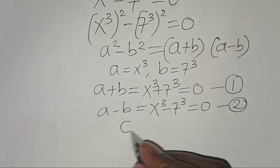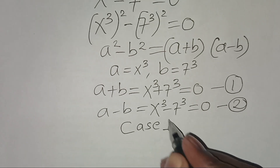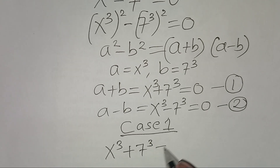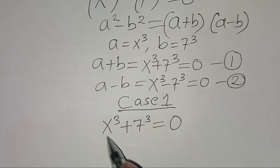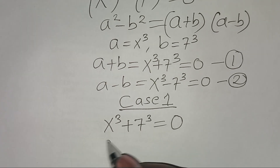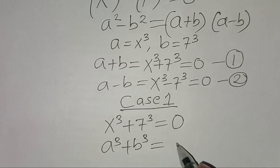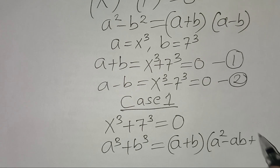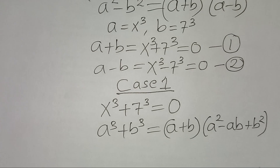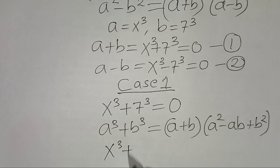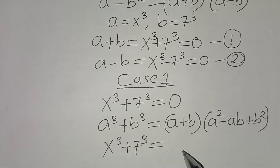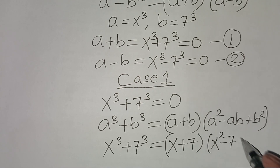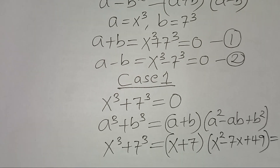Let's solve case 1, which is x to the power 3 plus 7 to the power 3, equal to 0. This is the sum of two cubes, in the form a cubed plus b cubed, which you can express as (a + b)(a² - ab + b²). Applying this identity: x cubed plus 7 cubed equals (x + 7)(x² - 7x + 49) = 0.